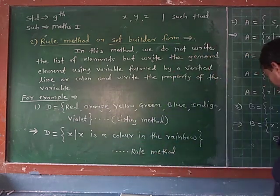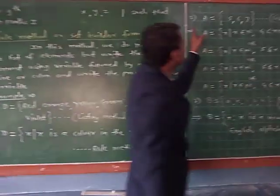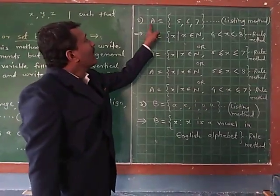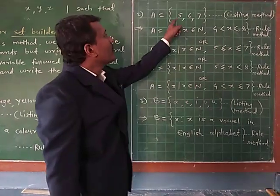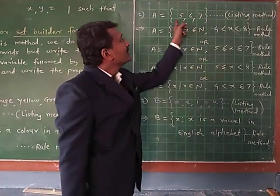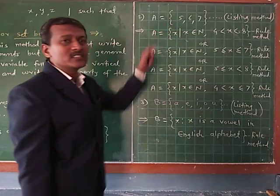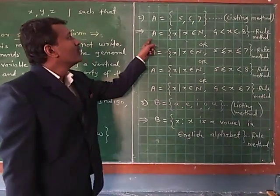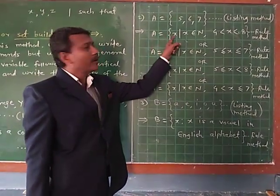Then the second example: B = {5, 6, 7}. This example is in the listing method. Convert this example into rule method. First, use the variable x. Here, 5 is x, 6 is x — meaning all three elements are considered as x. Therefore x is the variable.